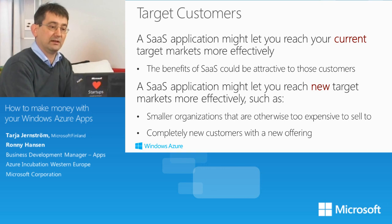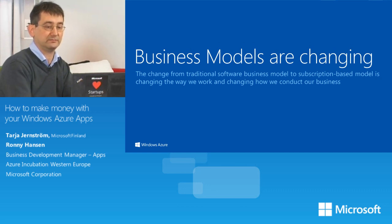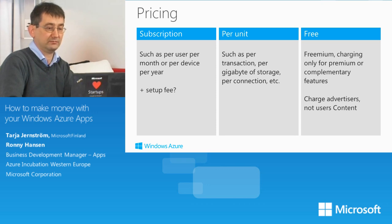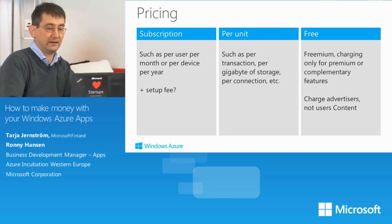Business models are changing — from the traditional licensing model to subscription-based models, and we have to evaluate how this impacts our industry. For pricing, there are three choices: per user per month or per device per year, sometimes with a setup fee; per unit, which you define yourself — it could be per transaction, per gigabyte of storage, or per connection; and the free or freemium version where you charge only for premium features. These pricing options can be mixed and matched, but you must evaluate carefully to find which is best for your business.